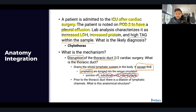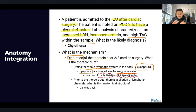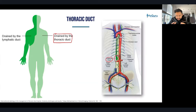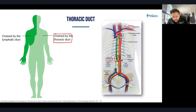Prior to the thoracic duct, there is a dilation of lymphatic channels called the cisterna chyli. This is a large dilation right before the thoracic duct empties into the left subclavian and left internal jugular. As you can see, the majority of the body is drained by the thoracic duct. The thoracic duct inserts right at that junction of the left internal jugular and the left subclavian.